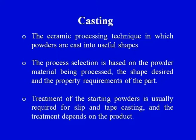Ceramic powder plus additive plus binder forms the ceramic raw material, and this raw material we have to give a particular shape depending upon the design requirement or the geometrical design of our final product. The first point on screen: the ceramic processing technique in which powders are cast into useful shapes. Before discussing this, let us first revise what we mean by casting. Casting is a very common process used for metals and is one of the important primary forming processes in metal processing.